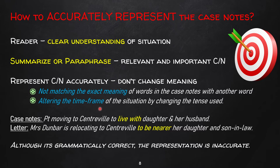You have to write information in chronological order. Here is an example: in the case notes it says 'patient moving to Centerville to live with daughter and her husband.' In the letter it says 'Mrs. Dunbar is relocating to Centerville to be nearer her daughter and son-in-law.' That is grammatically fine, but not accurate in meaning — she is not going to be near her daughter, she is going to live with her daughter. Do not change the meaning; that is important.